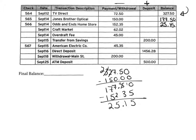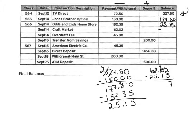Next, we have a withdrawal of $62.02. We know we're going to end up in the negative because we only have $25.15. Remember, the bigger number always goes on top. We borrow, and after working through the subtraction we get negative $36.87. And notice, that's an overdraft — that's why she got charged, because she took out too much money.